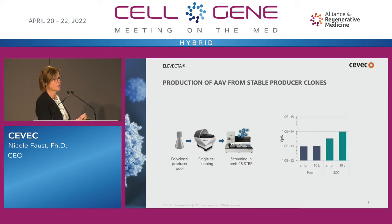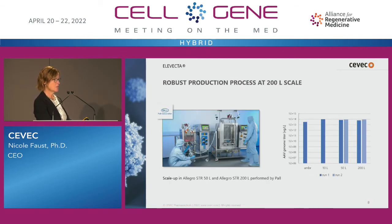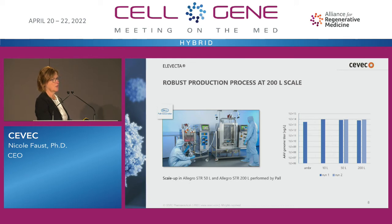200 liters is really critical scale, so we entered a collaboration with Pall, who used their Allegro STR bioreactor system — single use — and took our 10-liter process, scaled it up to 50 liters and then to 200 liters. The scale-up went very smoothly, and we achieved the same titers reproducibly in two independent runs at each volume. Scale-up is very straightforward with this platform, with no loss in yields. The titers shown are crude harvest with no enrichment.